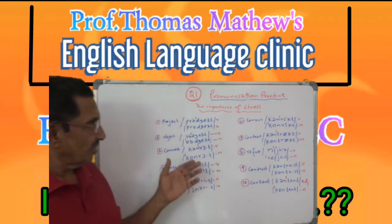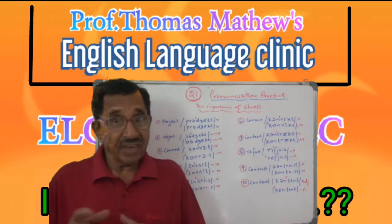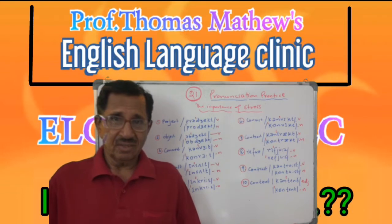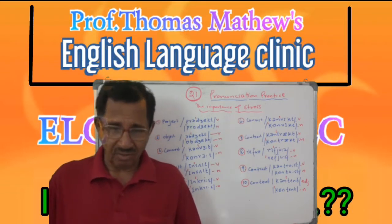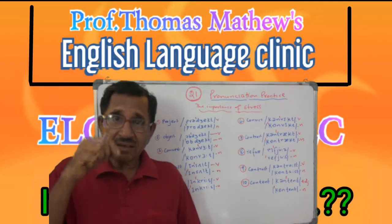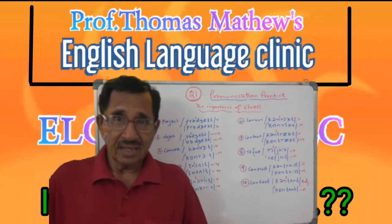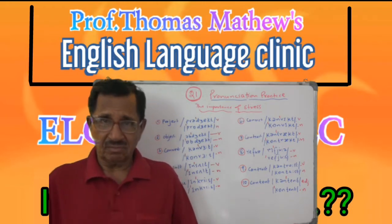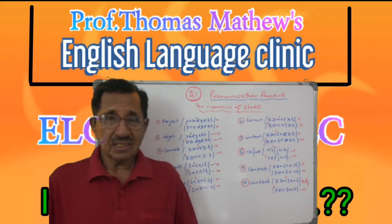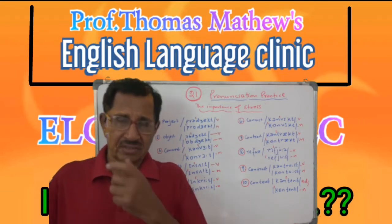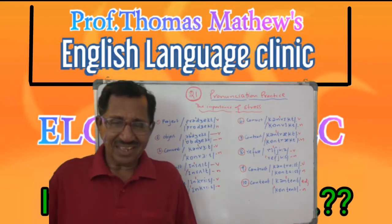Next we have 'convict.' To 'convict' somebody means to say that he has done something wrong — that is verb. A 'convict' is a person who has done something wrong — that is noun. The judge convicted a person, and therefore he has become a 'convict.'